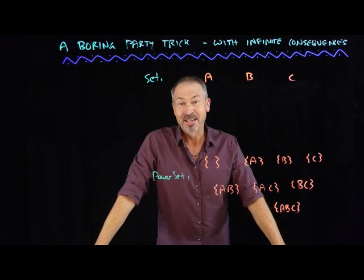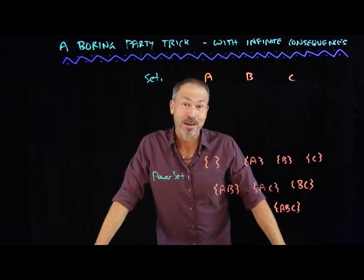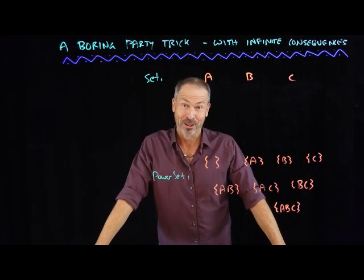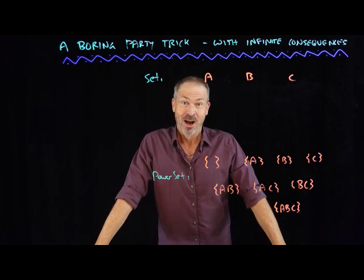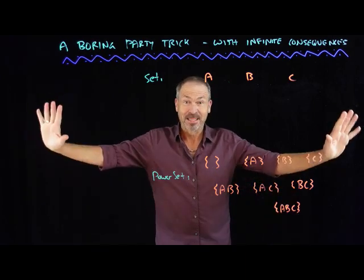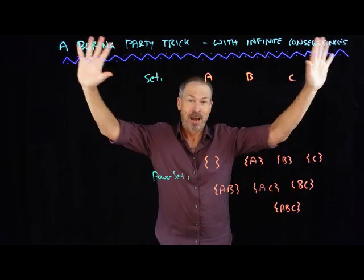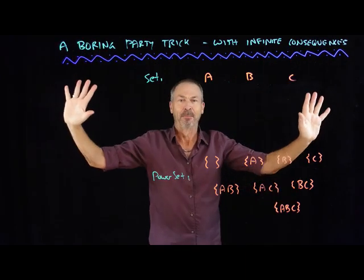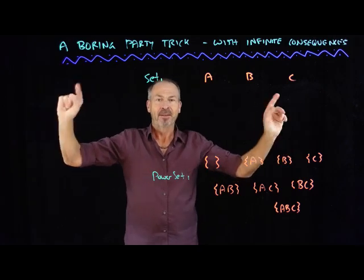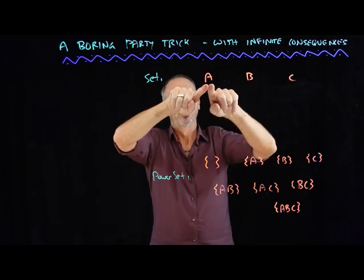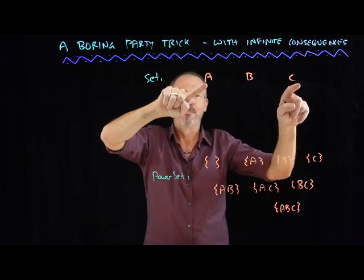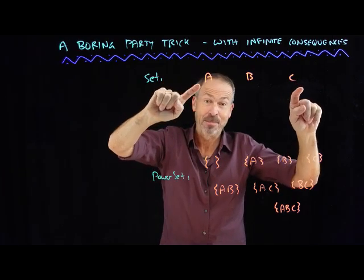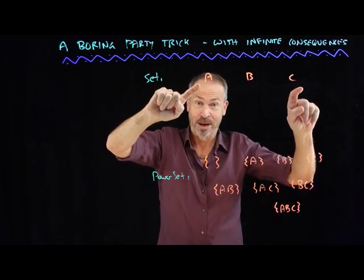G'day! Let's start today with a very boring party trick. At some event, get a large piece of paper, stick it to the wall, or use a whiteboard or something, and at the top of the page, write some letters of the alphabet. I just wrote A, B, and C, the first three.